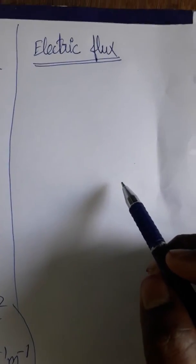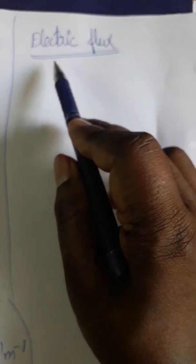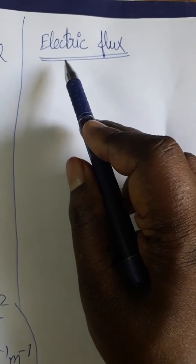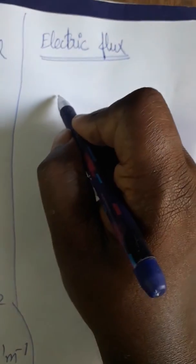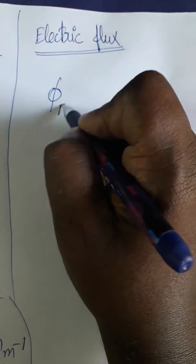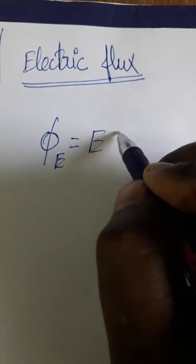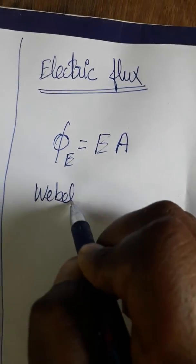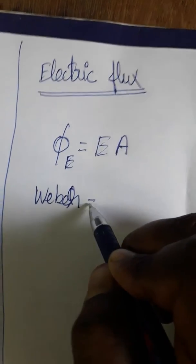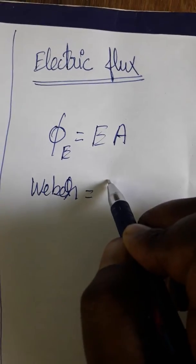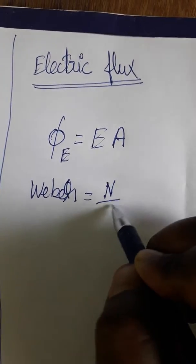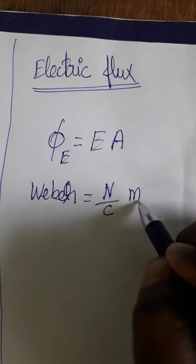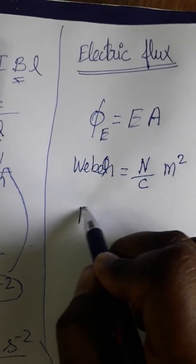Today I am going to explain the SI unit and dimension formula for electric flux. Electric flux is equal to electric field into area. The SI unit of electric flux is Weber. The SI unit of electric field is Newton per coulombs, and the SI unit of area is meter square.